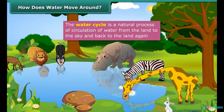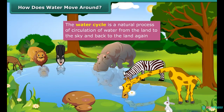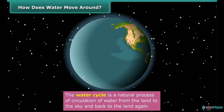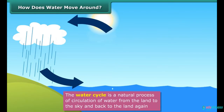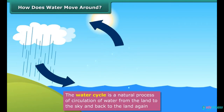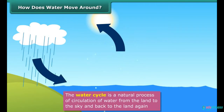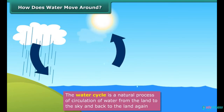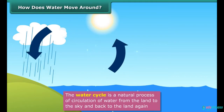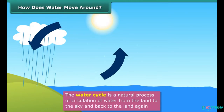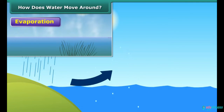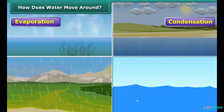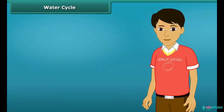Have you wondered how, despite consumption of water by living things on earth for hundreds of years, the balance of water on the planet has been maintained? It is the water cycle which makes it possible. The repeated changing of water in nature from liquid to gaseous form and then back to liquid form is called the water cycle. There are four main steps in the water cycle: evaporation, condensation, precipitation and collection. Let us try to understand how the water cycle operates.